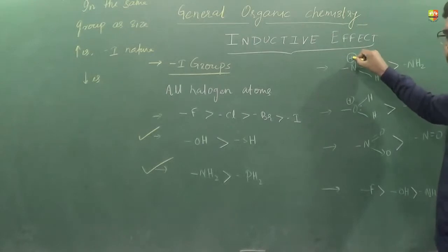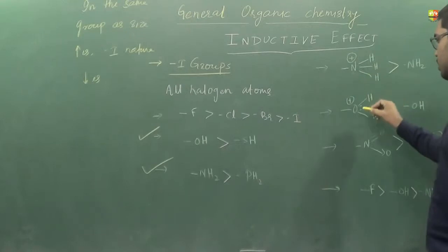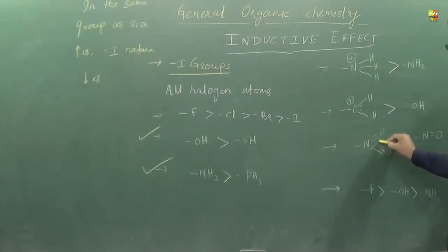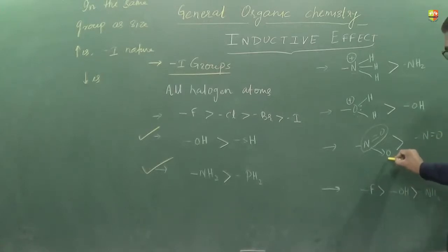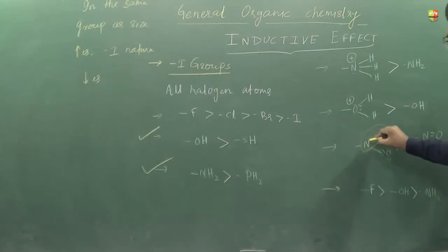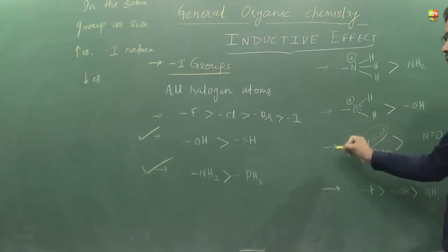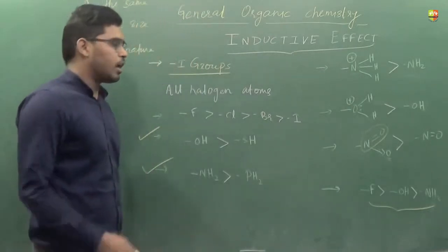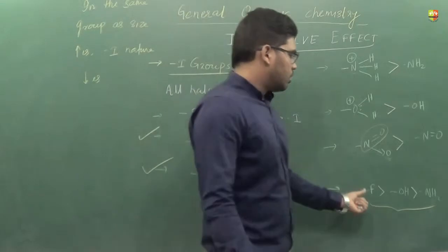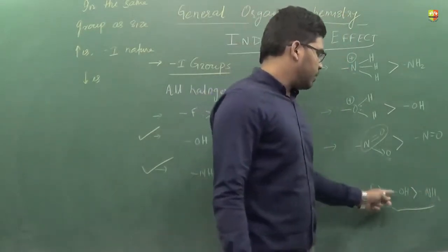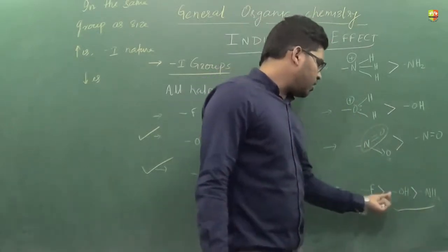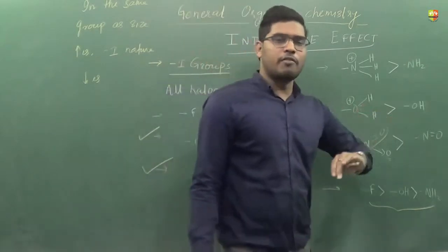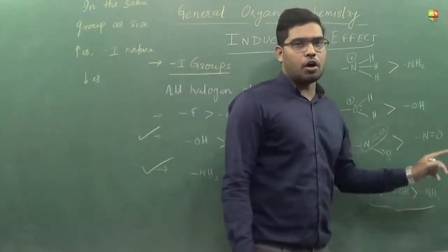For electron-deficient species like nitrogen with a positive charge, it has more tendency to withdraw electrons. Oxygen with a positive charge also has more withdrawing tendency. When nitrogen has one extra oxygen atom attached, it becomes comparatively more electron deficient. For fluorine, oxygen, and nitrogen — they belong to the same period (the second period), so size differences are not large. In such cases, we explain minus-I effect on the basis of electronegativity: more electronegativity means more minus-I nature, giving the order F > O > N.